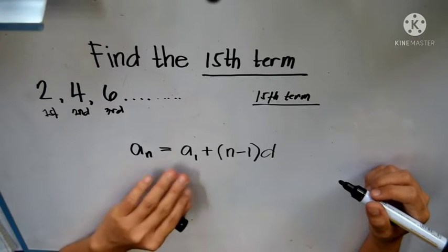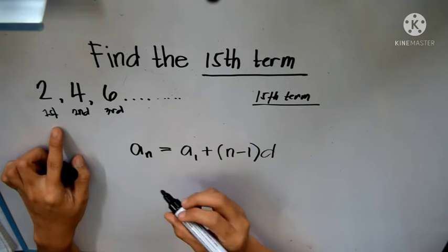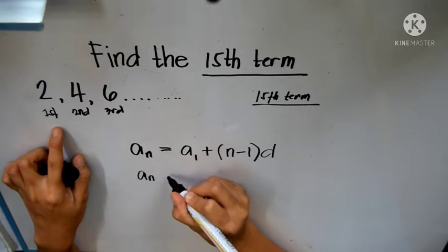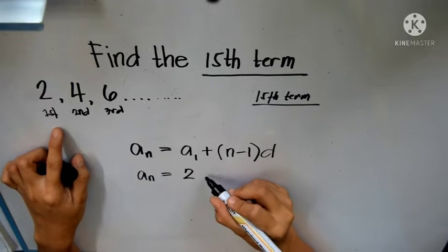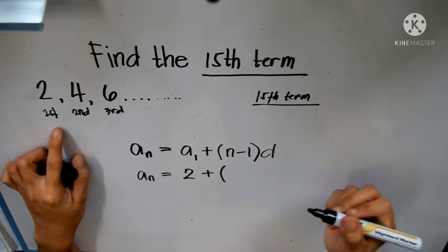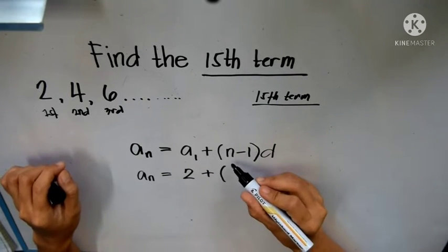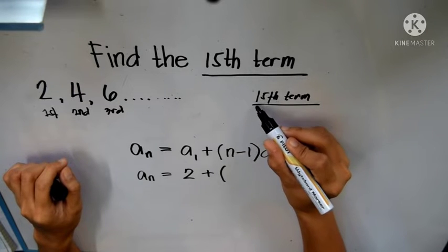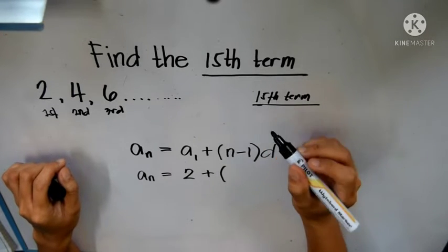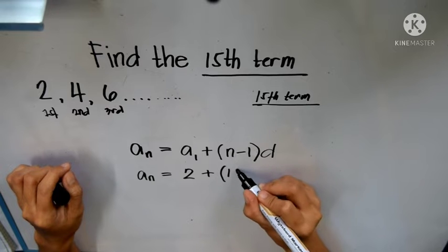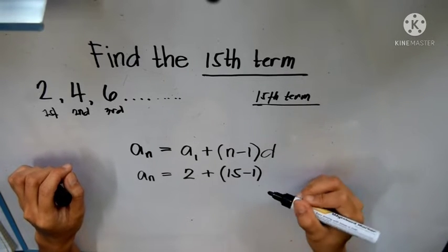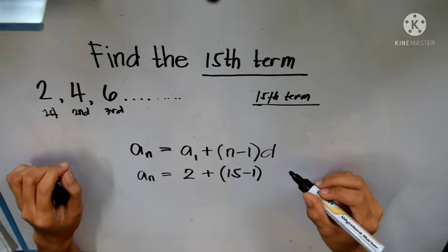a sub 1 is our first term which is 2. So a sub n equals 2 plus n minus 1. n is our 15th term, so 15 minus 1 multiplied by d.